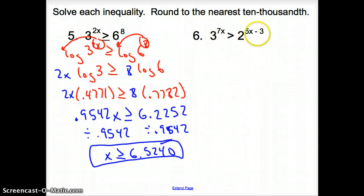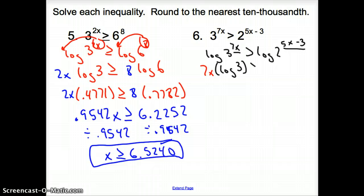Now with 6, only different story here is this 5x minus 3. How do we tackle that? Attack it the same exact way. Take the log of both sides. So we take log of 3 to the 7x greater than log of 2 to the 5x minus 3. Both exponents go in front of the log, 7x times log of 3 greater than 5x minus 3 times log of 2.